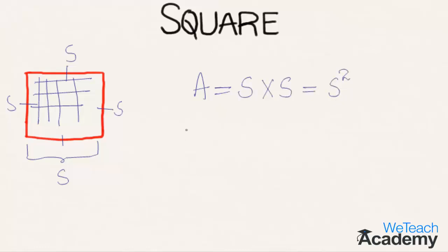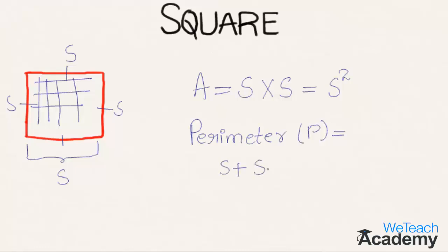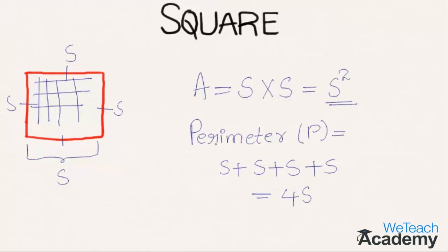Coming to the perimeter, denoted by p, it is nothing but the boundary of the closed geometrical figure. This boundary can be calculated by adding the length of all the sides: s + s + s + s, which equals 4s. So we have two formulas: area of square = s² and perimeter of square = 4s.